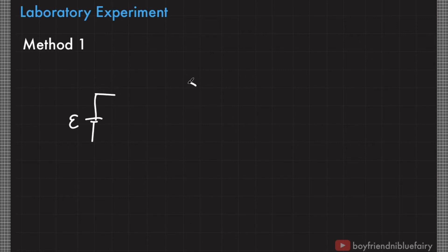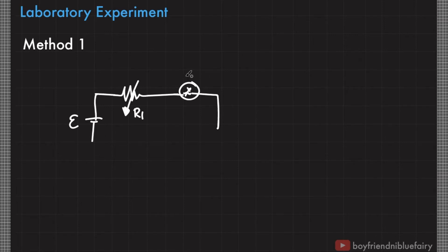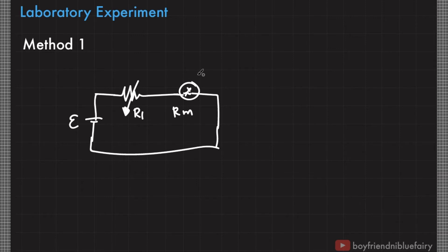Method 1 for determining the internal resistance of the galvanometer is called the variable resistor method. In this method, you have a known EMF, your galvanometer, and a potentiometer labeled R_1. The galvanometer has internal resistance R_m. You fix the EMF and control the potentiometer resistance so that the galvanometer gives a full scale deflection. The current through the galvanometer at this point is I_fsd, the full scale deflection current.